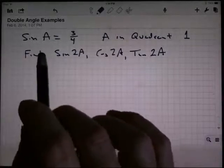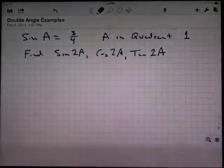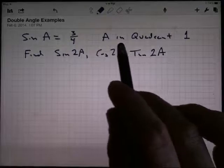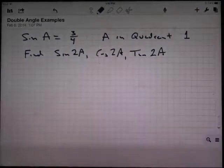I want to start with an angle A. I'm telling you that the sine of A is 3 fourths, and that A is a first quadrant angle, and I want you to find the sine of 2A, the cosine of 2A, and the tangent of 2A.